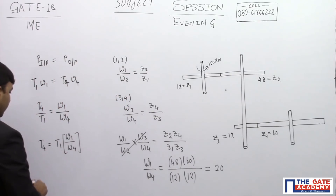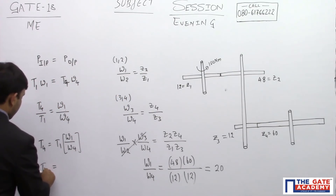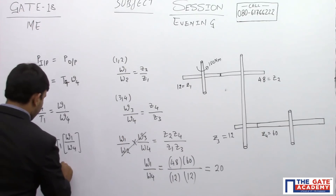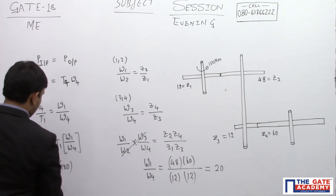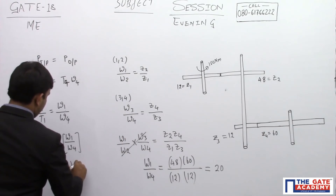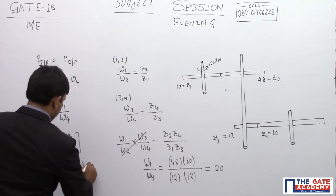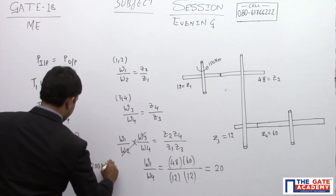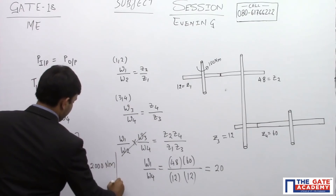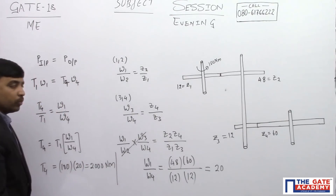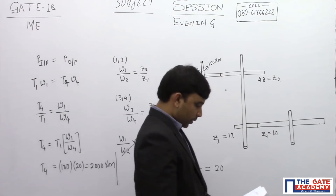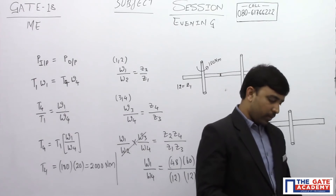The torque available at the output shaft is: T4 = T1 × speed ratio = 100 Nm × 20 = 2000 Newton meters. This is the torque on the output shaft at gear 4. This question was asked for one mark.